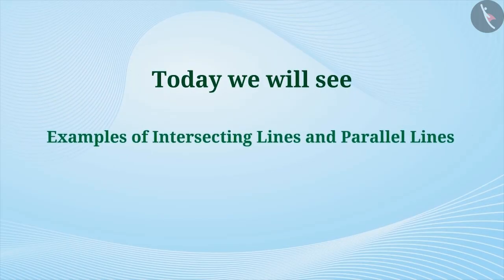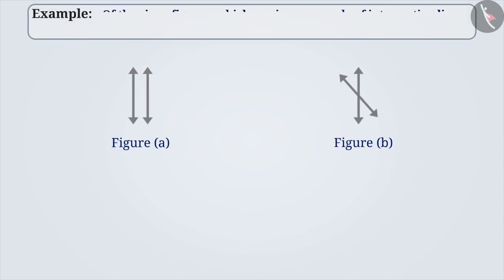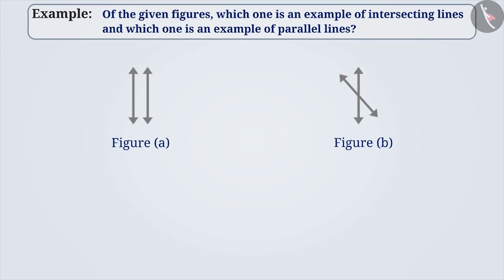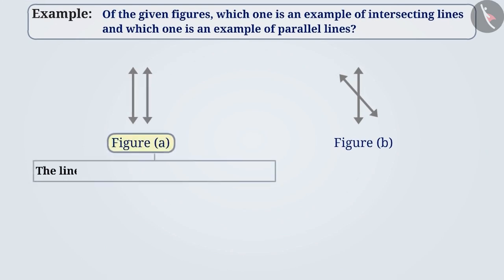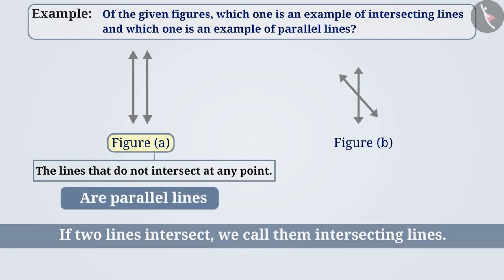Today we will see examples of intersecting lines and parallel lines. Of the given figures, which one is an example of intersecting lines and which one is an example of parallel lines? The two lines in figure A do not intersect at any point. Even if we extend those lines, they will not intersect at any point. Lines that do not intersect are called parallel lines. Therefore, the lines of figure A are parallel lines.